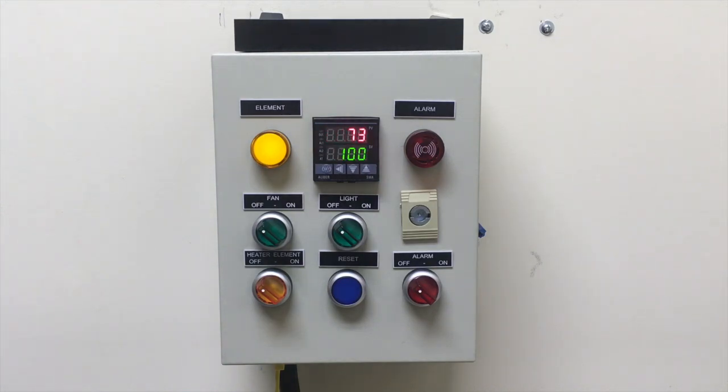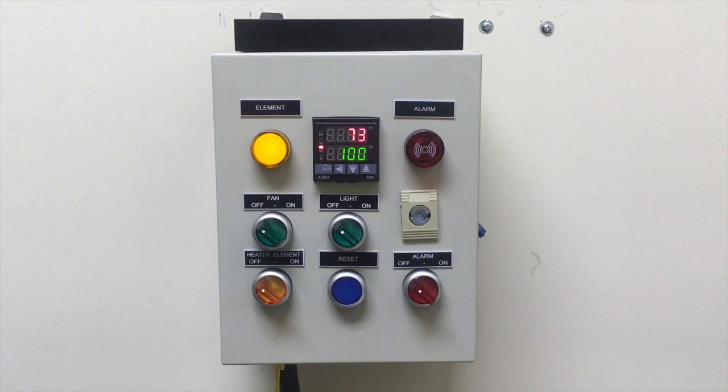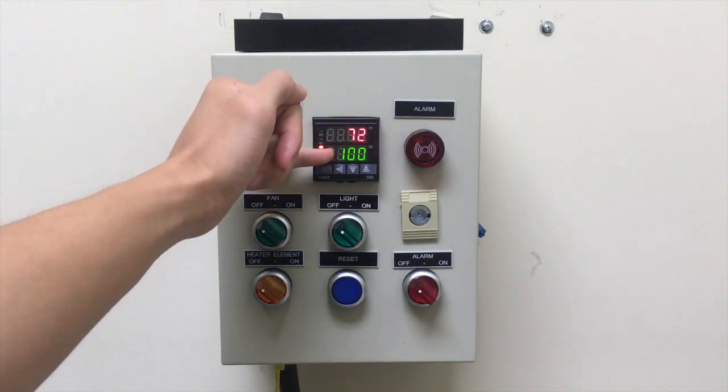So you see the top line here, PV, is our process value, what's reading from the sensor. And your SV or set value line is indicating your set temperature or your time when you're using the timer function.